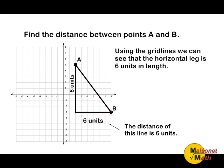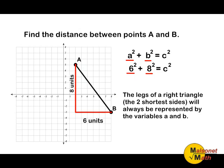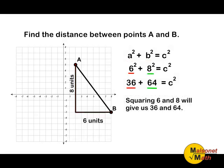Now that we know the length of side A and side B, we may plug those values into our equation and find the length of side C. The equation shown is the Pythagorean theorem. The legs of a right triangle will always be represented by the variables A and B. The values of A and B in this case are 6 and 8. The Pythagorean theorem states that we have to square those two values. 6 squared is 36 and 8 squared is 64. After squaring the lengths for A and B, you must add those results together.